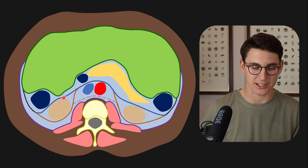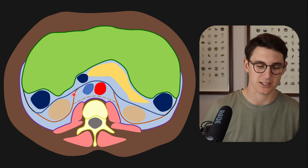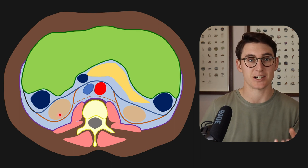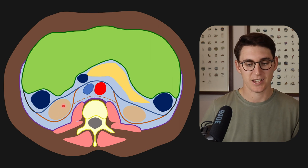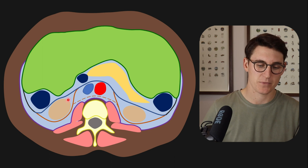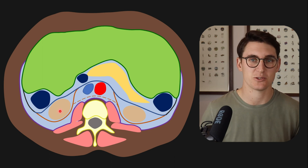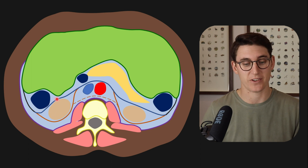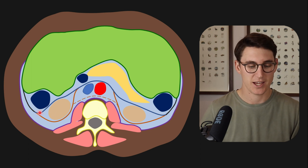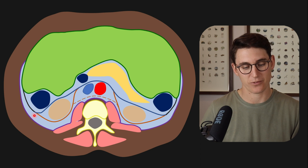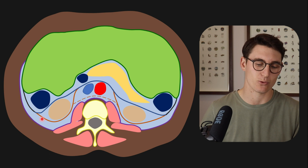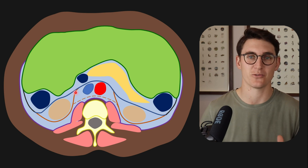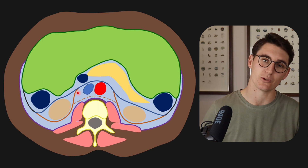Posterior to the anterior pararenal space, we have our kidneys filling a space known as the perirenal space. This perirenal space houses our kidneys and our adrenal glands, as well as the proximal ureters and the vessels going into the hilum of the kidney. The kidneys are surrounded by fat, as we saw on the CT scan, so this space also has fat filling it. The anterior border is Gerota's fascia or our anterior renal fascia. Posteriorly, we have a slightly thicker fascia called Zuckerkandl's fascia, or our posterior renal fascia. So Gerota's fascia anteriorly and Zuckerkandl's fascia posteriorly — or if easier, anterior renal fascia and posterior renal fascia.